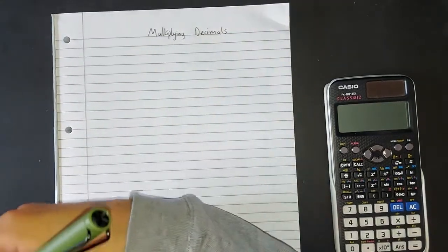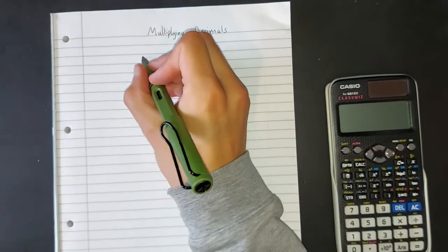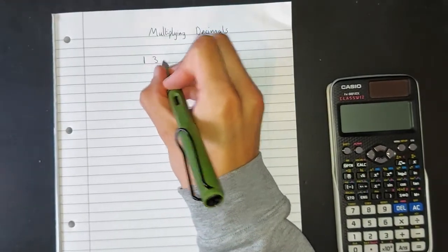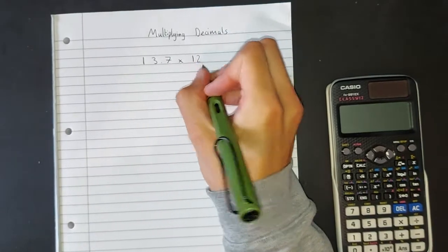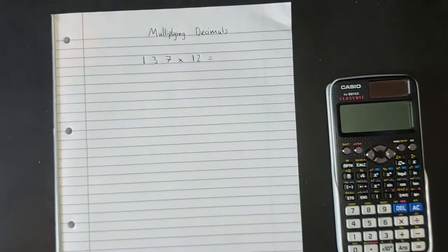So the first calculation we're going to look at, and if you want to, you can pause and have a go and see if you get the same answer as me, is 13.7 multiplied by 12. That's what we're going to try and work out.